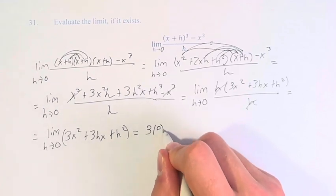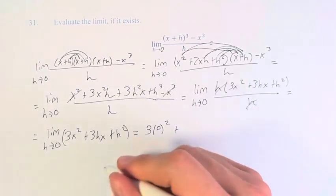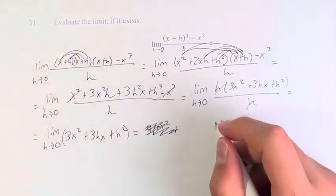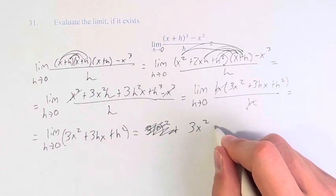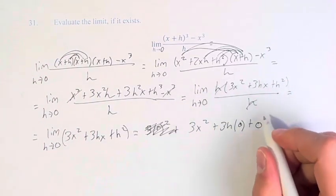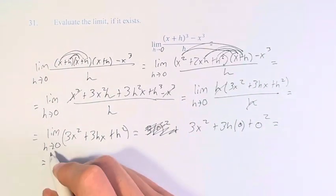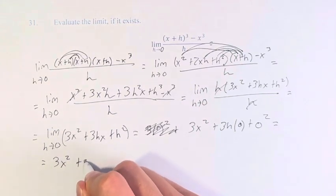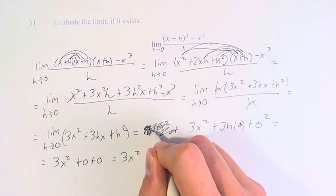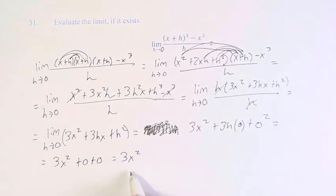That gives us 3 times x² plus 3h times 0 plus 0². This is 3x² + 0 + 0 or just 3x². Therefore the value of this limit is 3x².